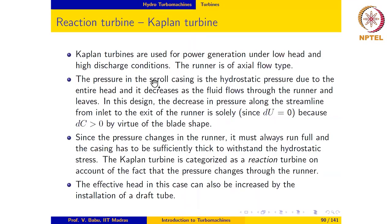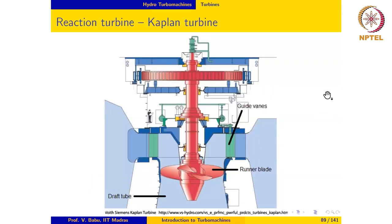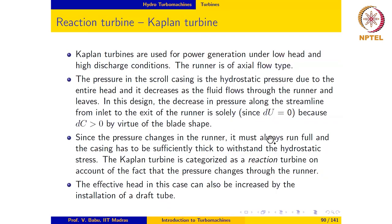Kaplan turbines are generally used for power generation under low head and high discharge conditions, and the runner is of axial flow type. The pressure in the scroll casing is the hydrostatic pressure due to the entire head, because the water from the dam reservoir is brought through the penstock pipe to the scroll. The pressure decreases as the fluid flows through the runner and leaves.